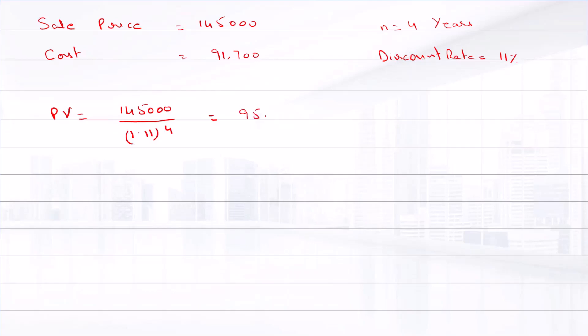That is equal to $95,515. The formula that we have used is present value equals future value divided by (1 + i) raised to power n.